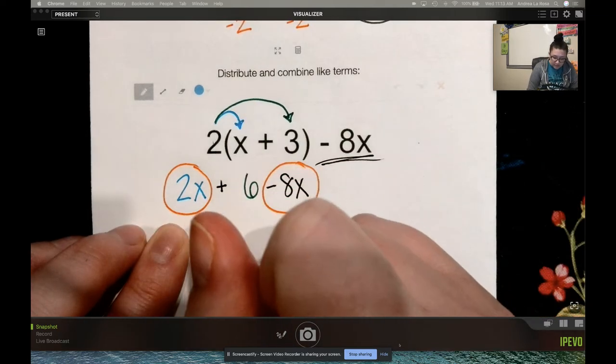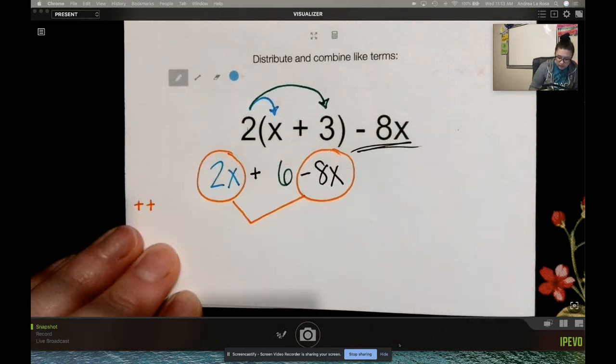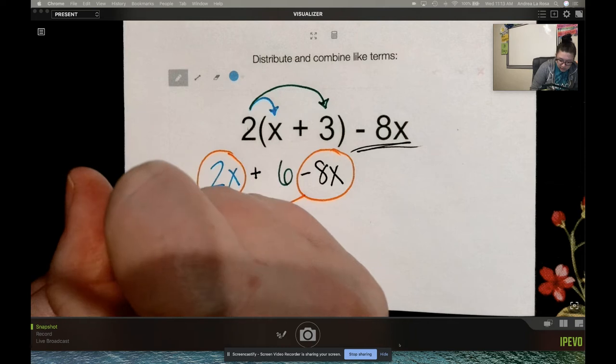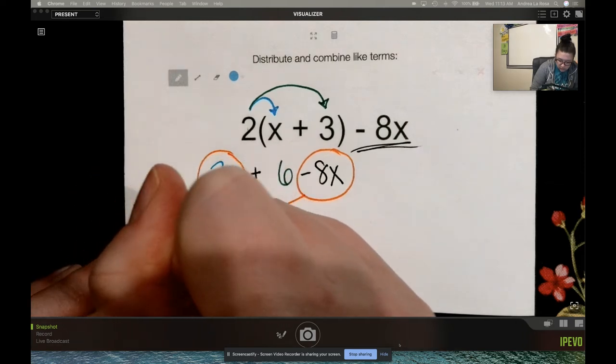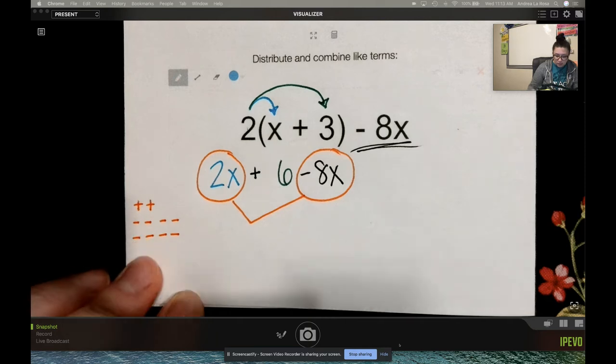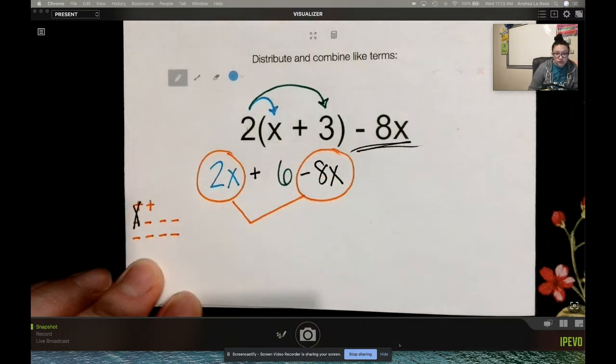So that when I combine those two things, if I have 2 positives and 8 negatives. I have 2 positive x's and 8 negative x's. Those two cancel.